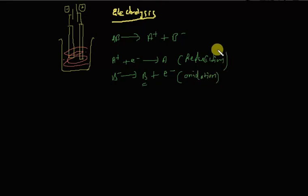Now, the electrode on which reduction takes place is called cathode. The electrode on which oxidation takes place is called anode.